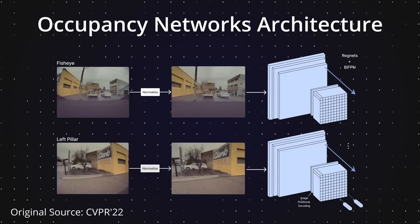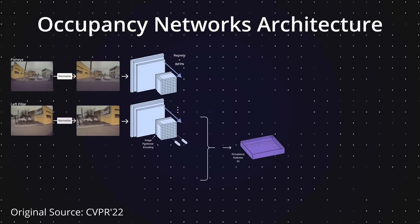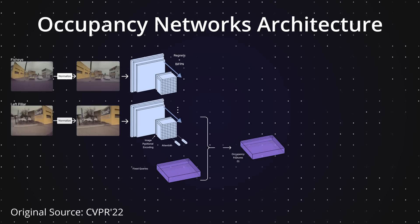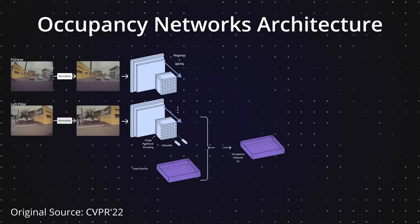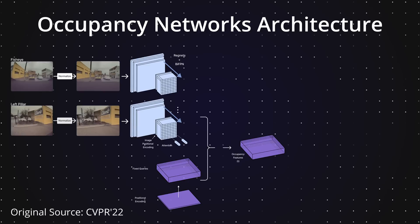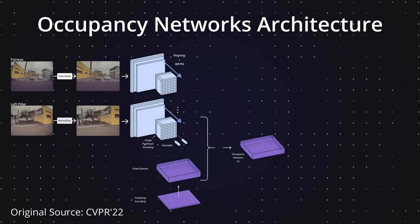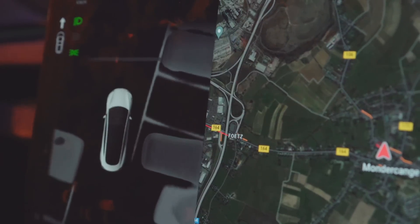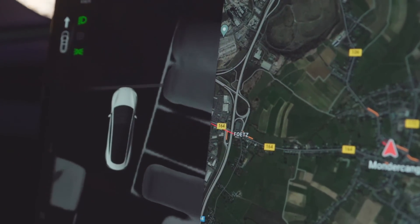The next step involves translating these high-dimensional features from image space into 3D occupancy features. This is done using a technique that pays special attention to specific points in space by giving each point a unique 3D code. The system can then focus on these points and understand the complex details from the camera's images, creating a clearer 3D picture of the surroundings.